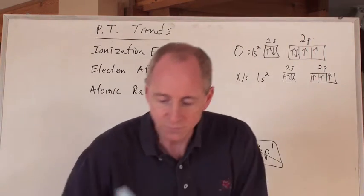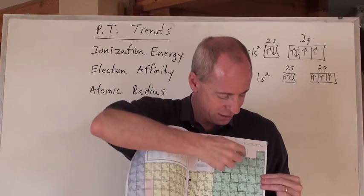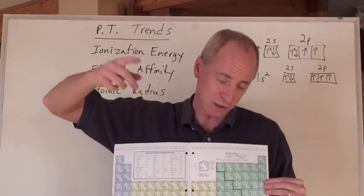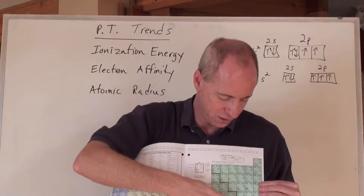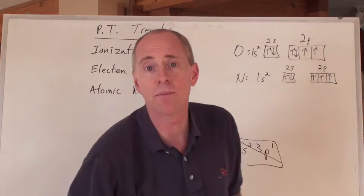So the trend buckers for ionization energy is anything here in group number 16 of the periodic table, and for electron affinity, it's group number 15 of the periodic table. Now, the last one, atomic radius.